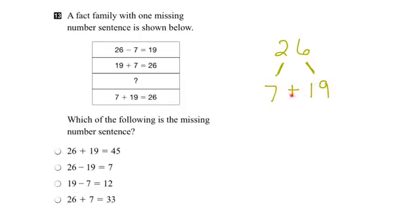If I went this way, 19 plus 7, that would equal that number there. So that's that number sentence there. So which one are we missing?